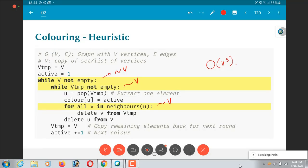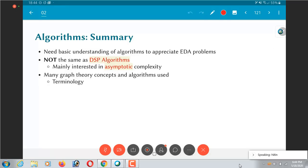So to summarize, we need some kind of a basic understanding of algorithms in order to appreciate EDA problems. What is EDA? Electronic Design Automation. And one important thing to keep in mind over here is the algorithms that I am talking about over here are not actually the algorithms that are the DSP algorithms like the fast Fourier transform or the discrete cosine transform. Those are also algorithms in the sense that they are once again a sequence of steps in order to solve a problem.